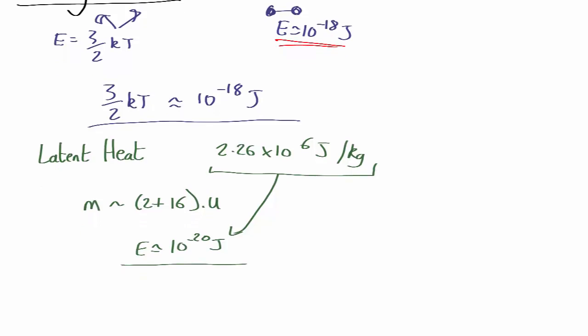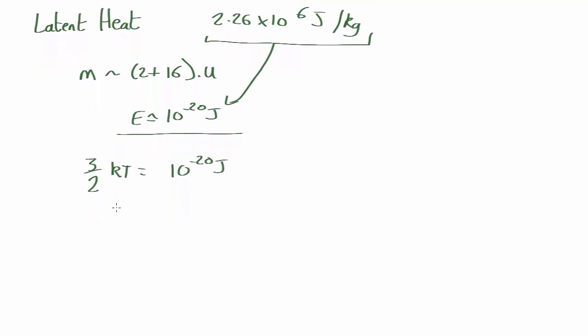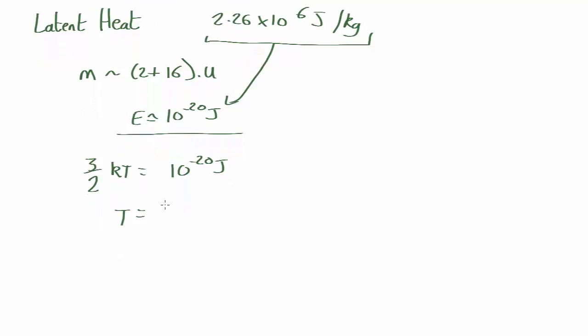Now we can say it'll boil when the typical thermokinetic energy equals this 10 to the minus 20 joules. If we solve that, we find T equals 10 to the minus 20 over three halves k, which comes out at about 460 degrees Kelvin, which is actually not too far wrong.